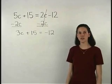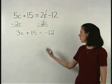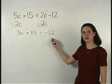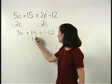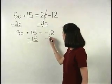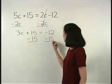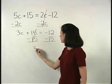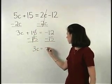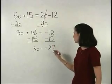Now let's put our numbers together on the right side of the equation. So let's subtract 15 from both sides and we have 3c equals negative 27.